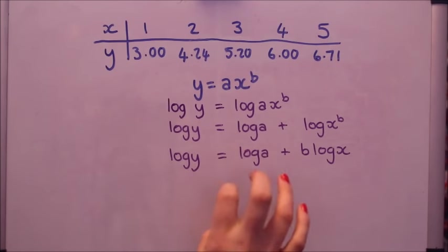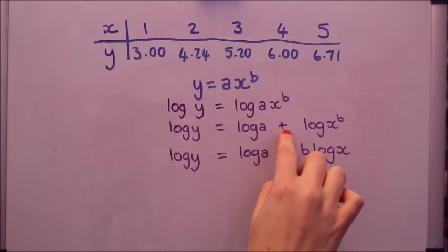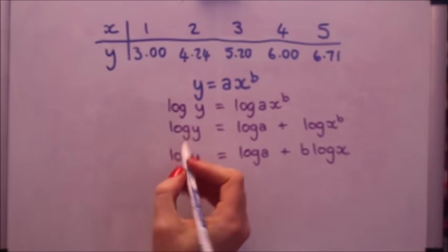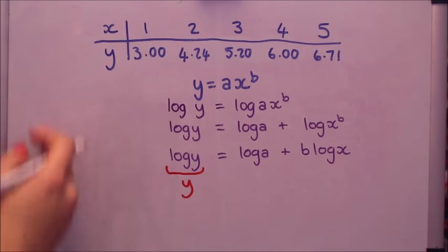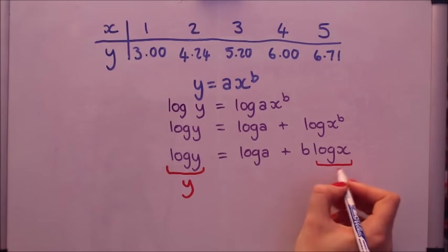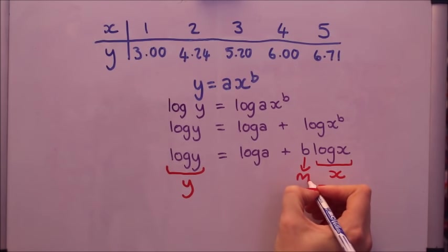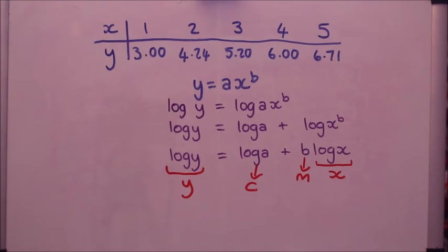So there I took logs of both sides and I split the multiplication up with an add and took the power down to the front. Now this actually does look something like a y equals mx plus c graph. If we have a look, that would be our y. So instead, on the vertical axis, instead of y values, we'll be plotting log y values. And here's the mx plus c bit. So if we plot log x instead of x, that means that b is the gradient and log a is the y-intercept for your y equals mx plus c.